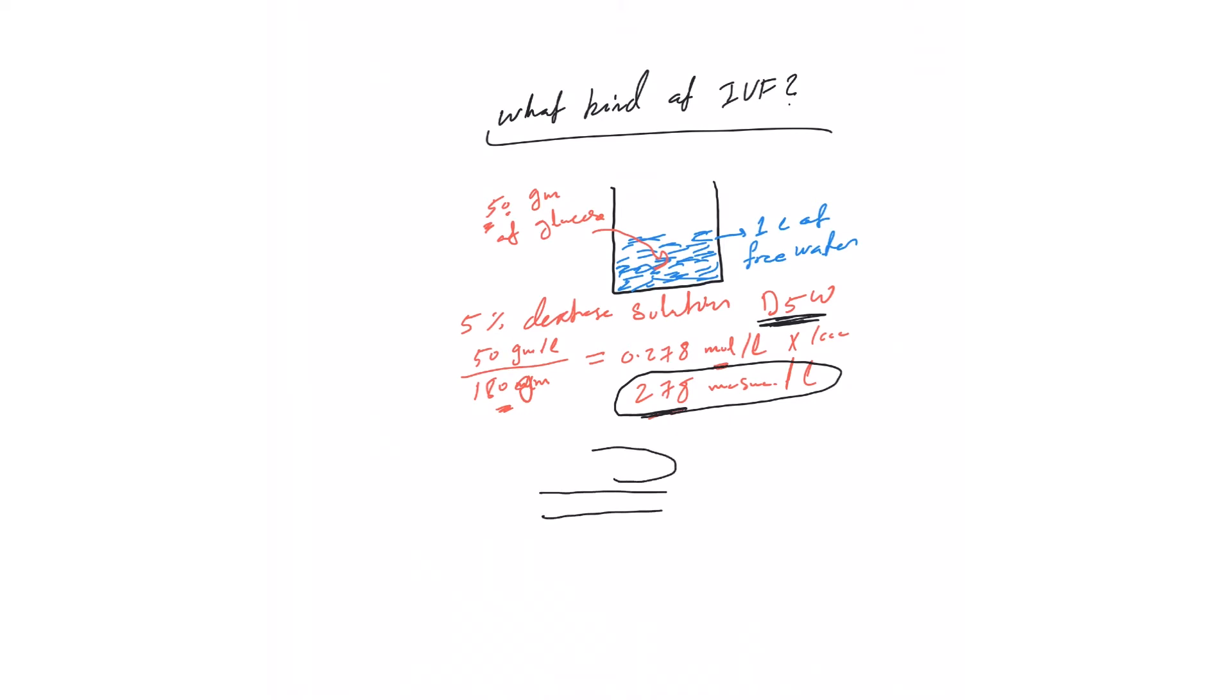Because once you infuse it - let's assume this is our vein and this is the cell - so once we infuse the D5W here, the sugar or the glucose moves freely through the cell membrane and gets absorbed. So whatever's left, as soon as it gets infused, the sugar is absorbed and what we're left with is a thousand ml of free water. Then this will of course follow the 60-40 rule: 60 percent goes intracellular, 40 percent stays extracellular.